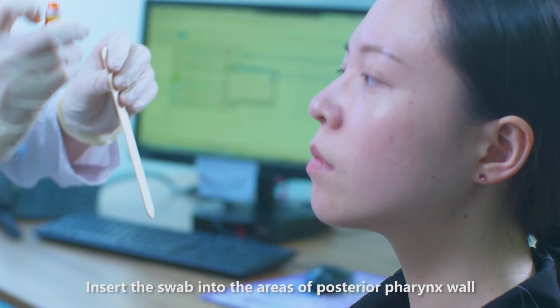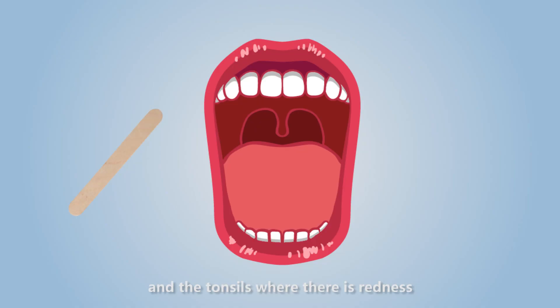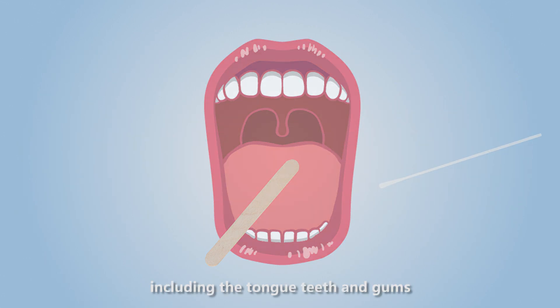Insert the swab into the areas of posterior pharyngeal wall and the tonsils where there is redness. Rub the swab over the areas firmly and gently to obtain a good sample. Remove the swab from the mouth without touching any surface including the tongue, teeth, and gums.